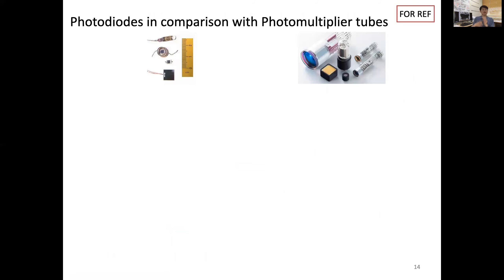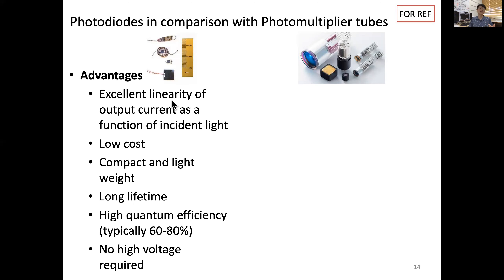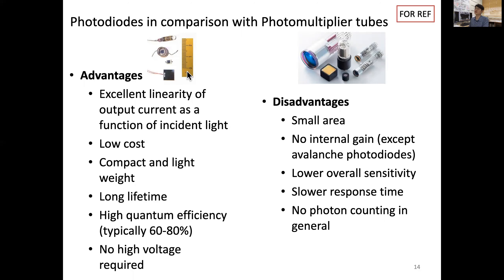Since I've introduced both PMT and photodiode, I want to give a sense of comparison. Photodiode has the advantage of excellent linearity of output current as a function of incident light intensity. It is much lower cost compared to PMT, which is inside a vacuum tube and very delicate — you can't shake or drop it or it will break. The photodiode is compact, lightweight, has a long lifetime, higher quantum efficiency, and does not need a high voltage power supply as PMT does.